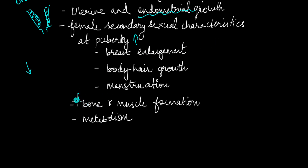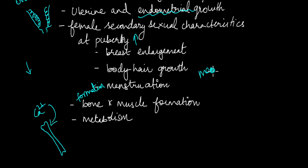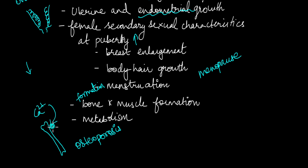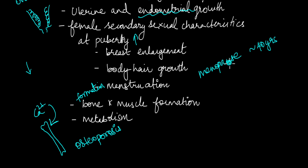Estrogen is very important for bone formation — it is involved in picking up calcium from the blood and incorporating it into the bone. This is important because during menopause, which is the stage where there are decreased levels of female sex hormones, women begin experiencing conditions like osteoporosis, which is caused by brittle bones where there is not enough calcium in the bones. This occurs due to a decrease in estrogen levels, and osteoporosis is very common among menopausal women, which includes many women over approximately 40 years of age. Menopause also causes other symptoms such as hot flashes, irritability, mood swings, and increased sweating.